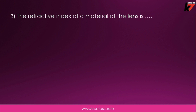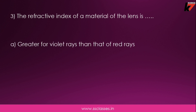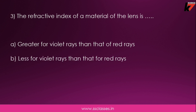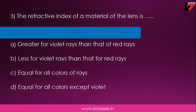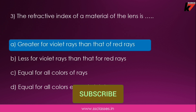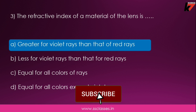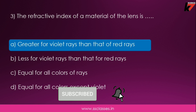Third question: the refractive index of a material of the lens is — greater for violet rays than that of red rays, or less for violet rays than that of red rays, or equal for all colors, or equal for all colors except violet? The first option is correct: the refractive index is greater for violet rays; red has the smallest refractive index.